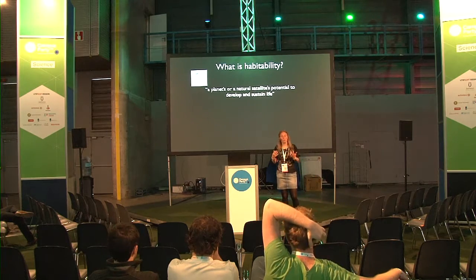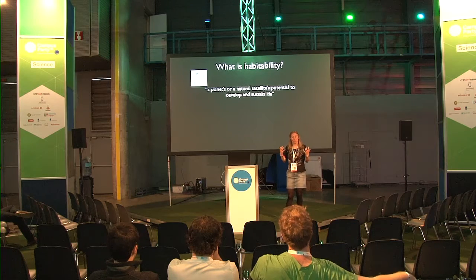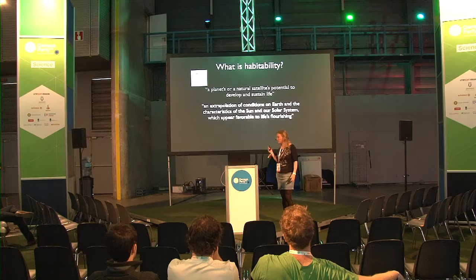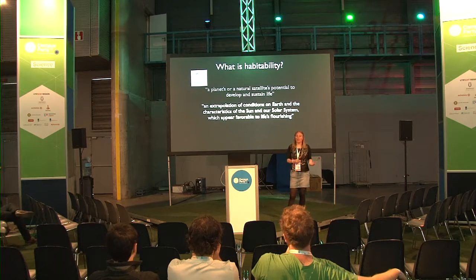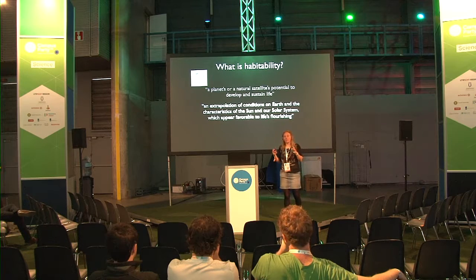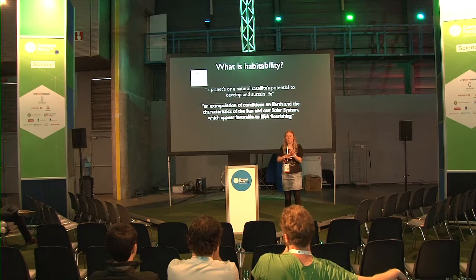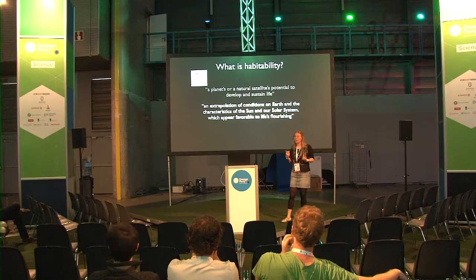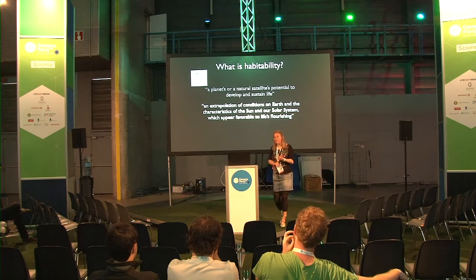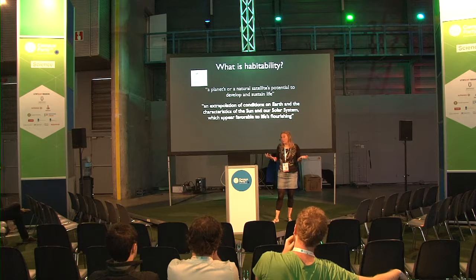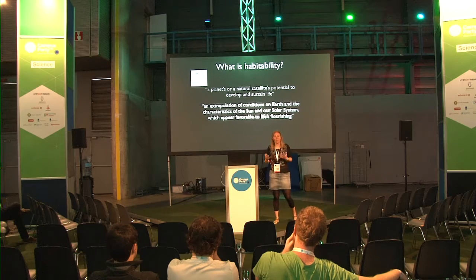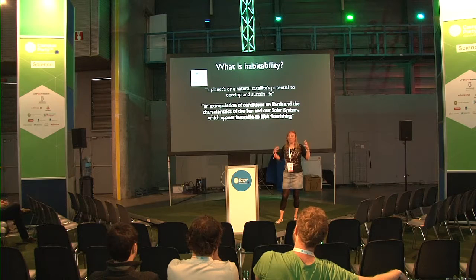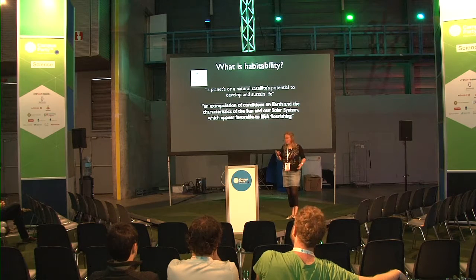Not only would it be possible to develop life there, but if life is there, would you be able to sustain it? Earth is the only system we know where life exists. So we define habitability basically as an extrapolation of the conditions on Earth and the characteristics of the Sun and of our solar system, because they seem to be favorable to life. This is our framework, and then we see how we can extrapolate that to other planets or satellites.